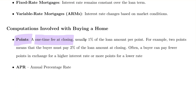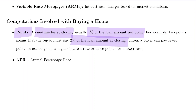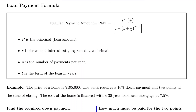Points are a one-time fee at closing — it's 1% of the loan amount per point. The reason somebody would want to purchase a point is that it reduces the interest rate on the loan. For instance, if a buyer paid two points, they'd have to pay two percent of the loan amount at closing to secure a certain reduction in interest rate.